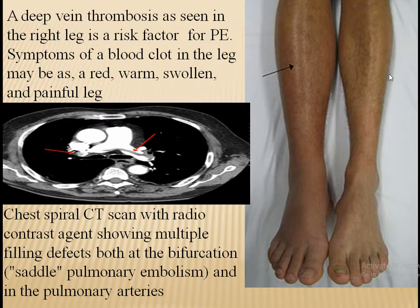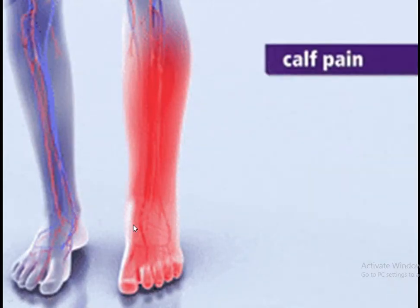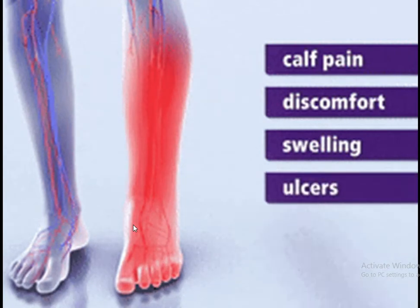A deep vein thrombosis as seen in the right leg is a great risk for the pulmonary embolism, which I will discuss later. It can create an embolus going towards the lung and creating the problem called pulmonary embolism. Symptoms of a blood clot in the leg may include a red, warm, swollen, and painful leg, as well as cough, pain, discomfort, swelling, ulcer, and rashes.